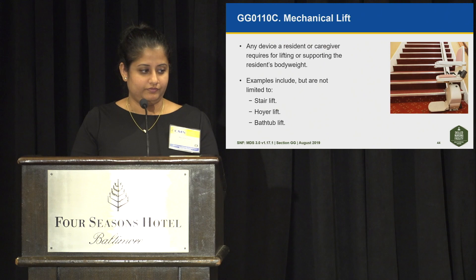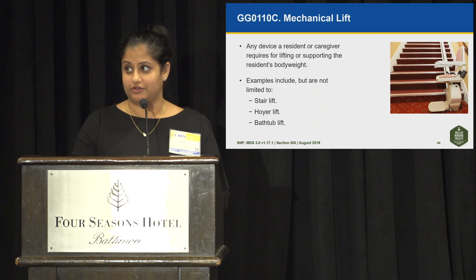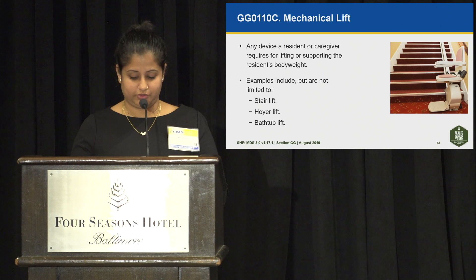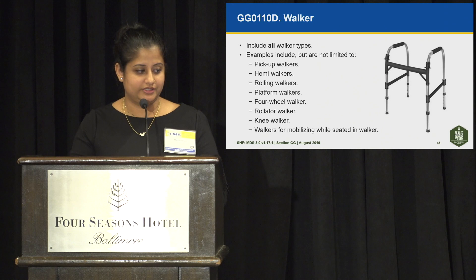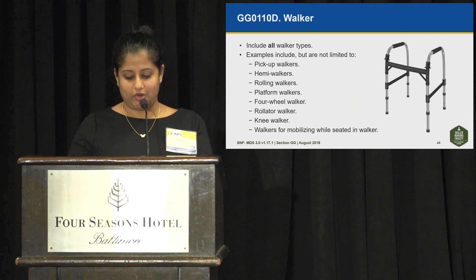GG0110C mechanical lift is any device a resident or caregiver requires for lifting or supporting the resident's body weight. Examples include stair lift, Hoyer lift, and bathtub lift — this is not an exhaustive list. GG0110D walker includes all walker types: pickup walkers, hemi walkers, rolling walkers, platform walkers, four-wheel walkers, rollator walkers, knee walkers, and walkers for mobilizing while seated in the walker.